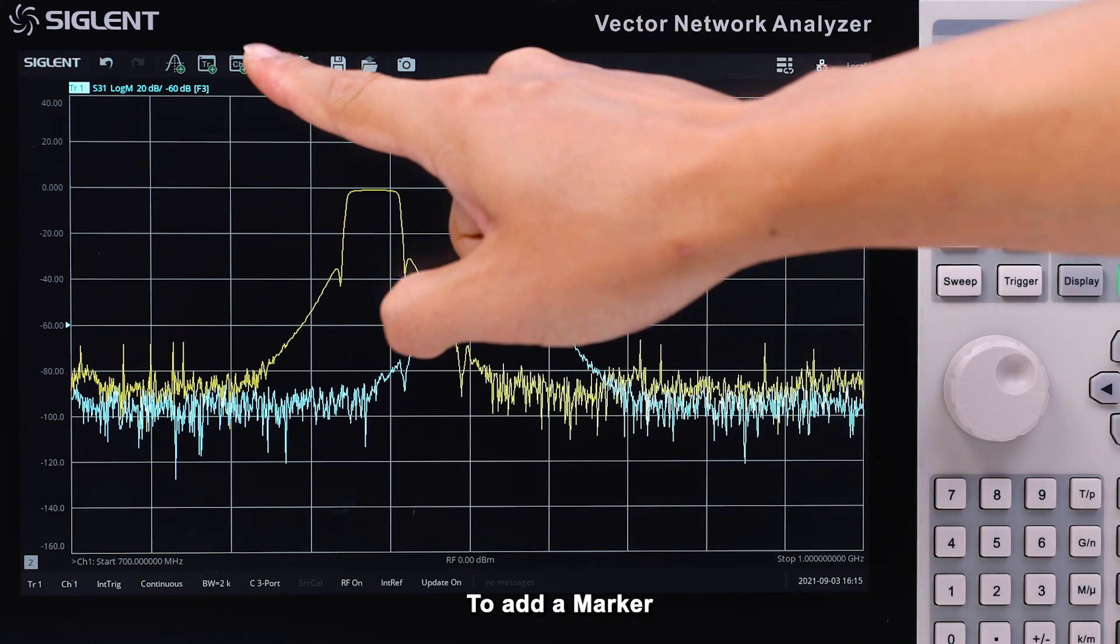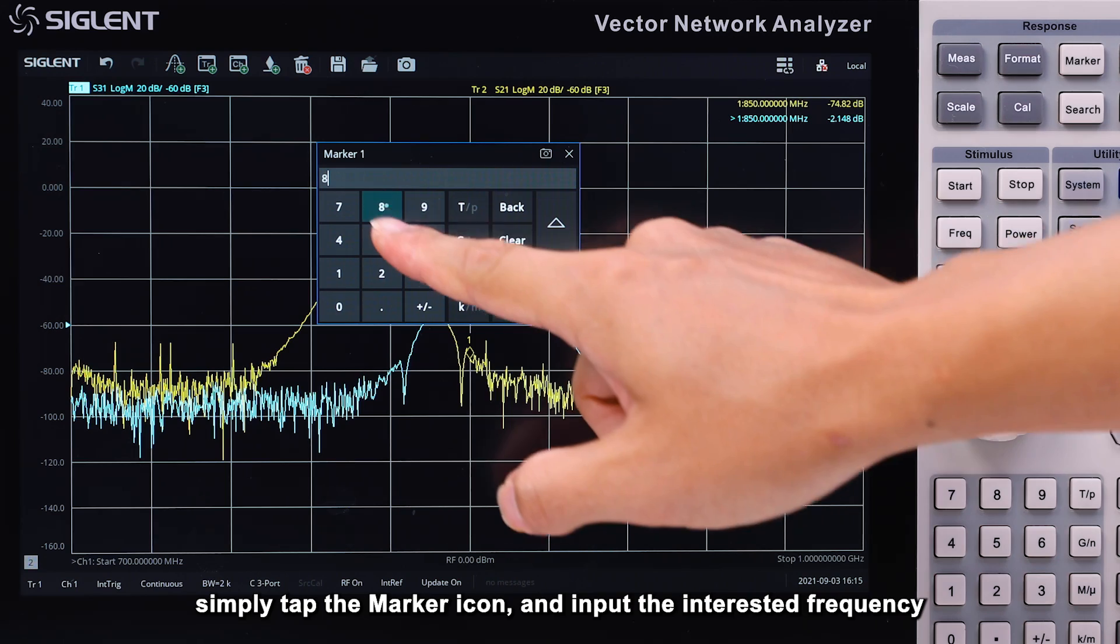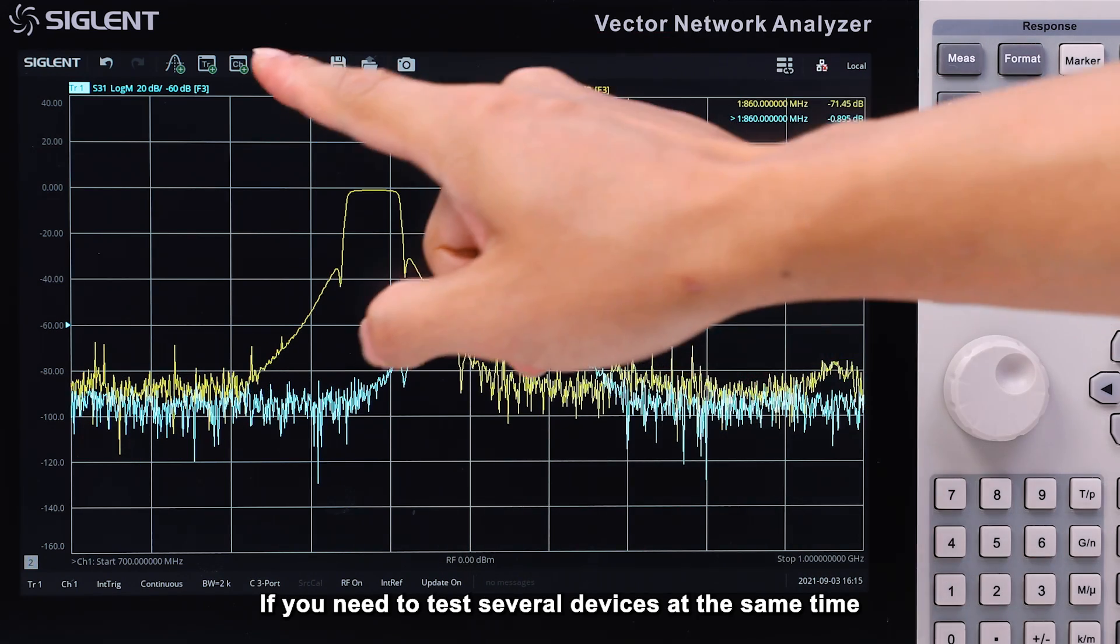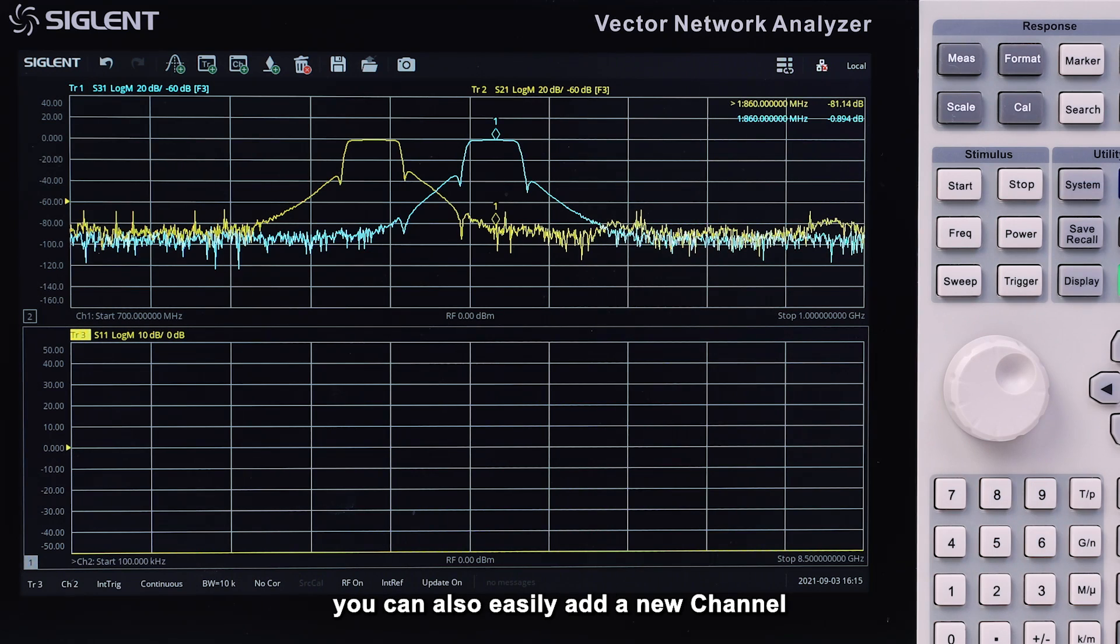To add a marker, simply tap the marker icon and input the interested frequency. If you need to test several devices at the same time, you can also easily add a new channel.